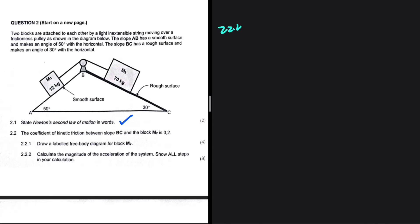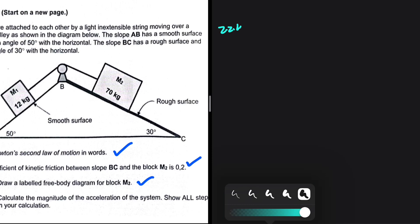The coefficient of kinetic friction between the slope of BC and the block M2 is 0.2. Draw a labeled free body diagram for block M2. Let's go ahead and take a look at block M2 and see what we can do.